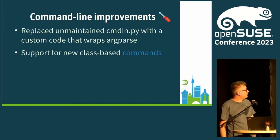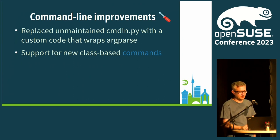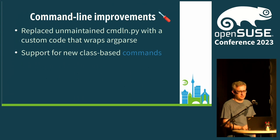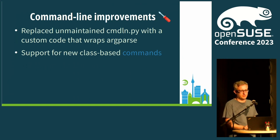Command line improvements. CmdLn.py was something found on the internet in the past and bundled into OSC. Now it has been replaced with custom code, which is way easier to manage. It is also using argparse rather than the deprecated option parser. Another change is new classes that wrap the commands. The advantage is that we can finally split the huge commandline.py into smaller chunks and manage parent-child relationships among these classes, so we can build a command tree quite easily. OSC commands can have subcommands now without any special hacks.